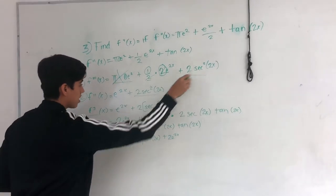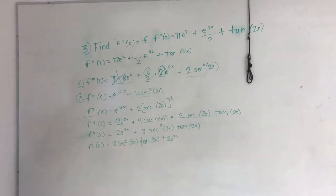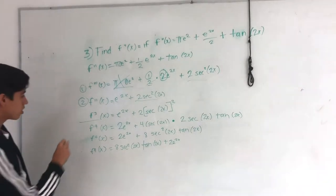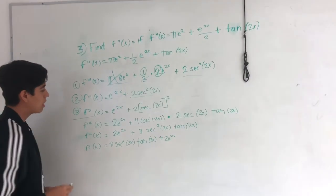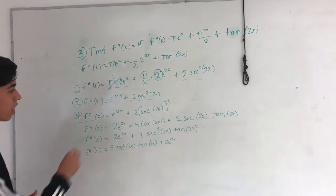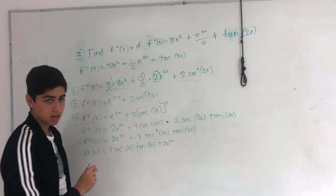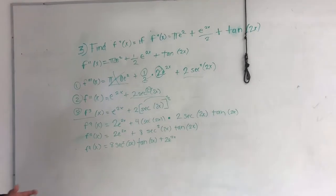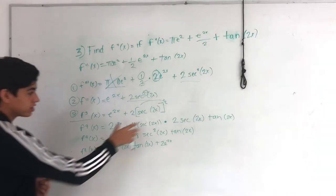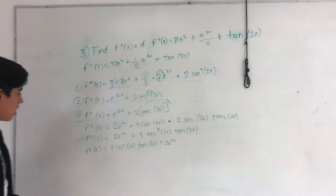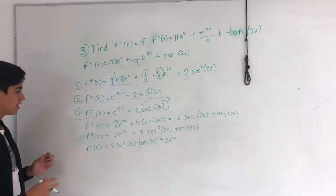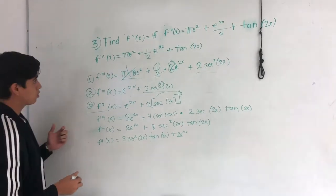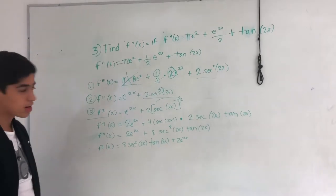Because you have the one, plus the same answer, we have right here: 2 secant squared of 2x. In the third step, you move this exponent out and put it in brackets, like multiplying all the secant of 2x. This gives us the final answer for the third derivative of x, but they asked us to find the fourth derivative, so we continue.